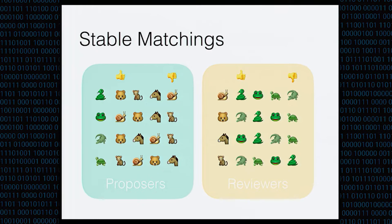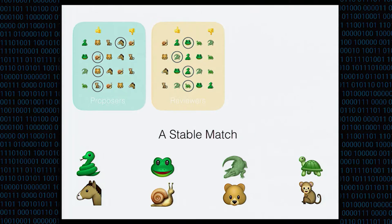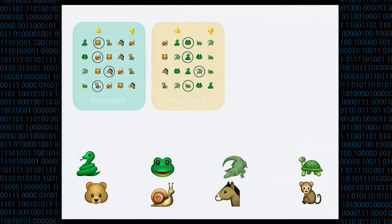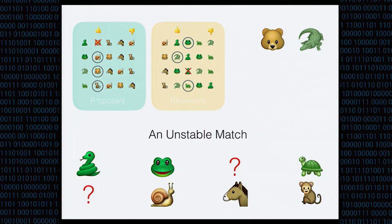There are many different ways to make matchings, and many different attributes they can have, but the attribute we're interested in is stability. In a stable matching, if you look at the preferences of the proposers, three of them got their top match. Snake got his third match, which is horse. But if we look at the two people snake would have rather been matched with — bear and monkey — both of them actually rated snake far lower than the person they were matched with. That makes this match stable: you can't find a potential pairing where both members would rather be matched with each other than their current match. On the other hand, in an unstable matching, crocodile and bear would rather be matched with each other than the people they were matched with, so they might break their matches and leave snake and horse alone.